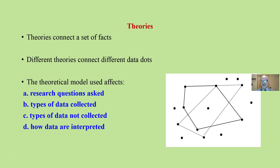A theory connects a set of facts. If reality were a dot-to-dot picture, it would be connecting the dots. Now, different theories connect different data dots differently.